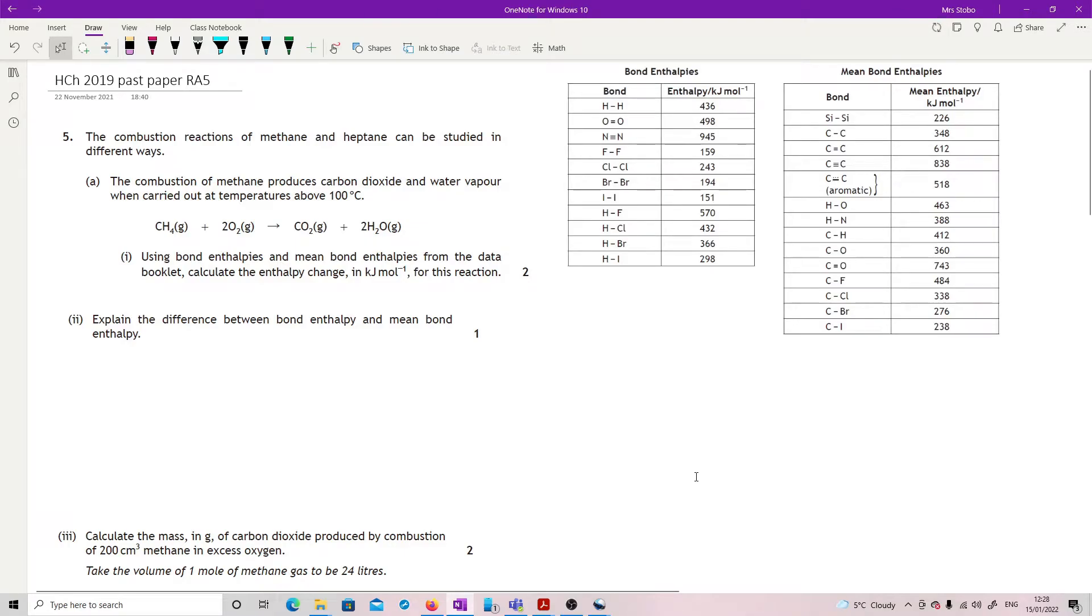This is question 5 in the restricted answer. The combustion reactions of methane and heptane can be studied in different ways. The combustion of methane produces carbon dioxide and water vapour when carried out at temperatures above 100 degrees C. You're given the equation.